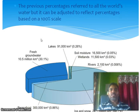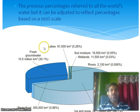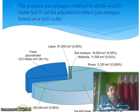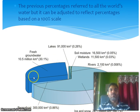The previous percentages refer to all the world's water, but they can be adjusted to reflect percentages based on a 100% scale. So fresh groundwater, lakes, soil moisture, wetland, river, ice and snow, and permafrost — this is the distribution of water.